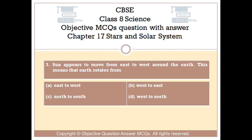Question number 3. The Sun appears to move from east to west around the Earth. This means that Earth rotates from: Option A: East to West. Option B: West to East. Option C: North to South. Option D: West to North.